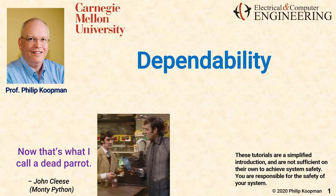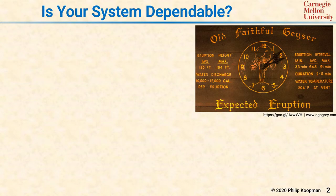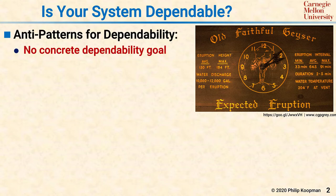This is Phil Koepman with a tutorial on dependability for embedded systems. Some things have a reputation for being dependable — for example, the Old Faithful geyser in Yellowstone National Park can be counted upon to erupt on a regular basis. If you want your embedded system to be dependable, you need to avoid the following anti-patterns. You have a problem with system dependability if you do not have a written, concrete dependability goal in your system requirements.